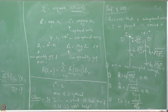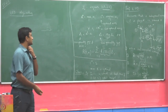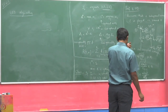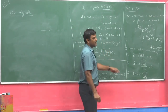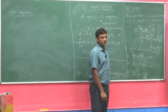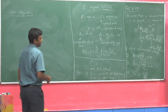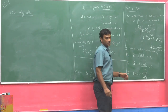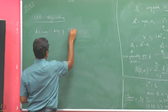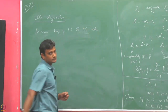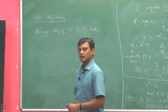Now let us see why this claim holds. We are going to show this by contradiction: suppose none of the three conditions holds, then we argue that arm i could not have been played in round t. So assume none of conditions 1, 2, 3 are true, and we will show that i_t cannot equal i.